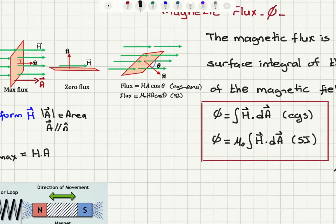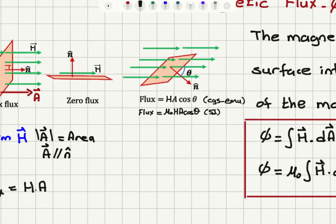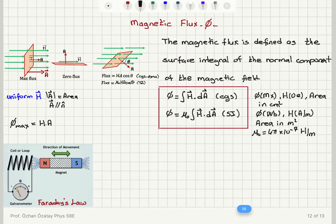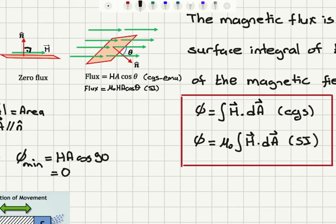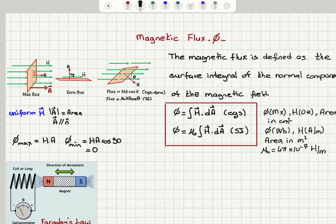If the area vector is perpendicular to a uniform magnetic field H, the dot product gives zero flux. In that case, phi-minimum equals H·A·cos(90°), which is zero. In general, the flux for a uniform magnetic field is H·A·cos(θ) in CGS, where θ is the angle between the area vector and H, or mu-zero·H·A·cos(θ) in SI units.